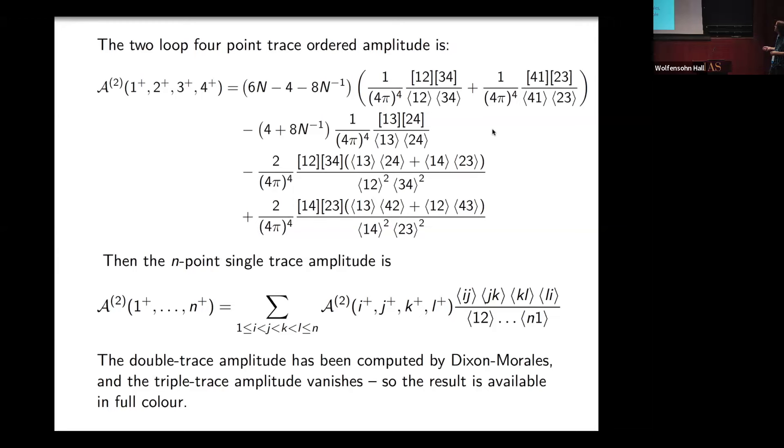The double-trace amplitude is being computed by Lance and Anthony. The triple-trace amplitude vanishes. So actually, this result is available in full color, but only with this weird matter content.